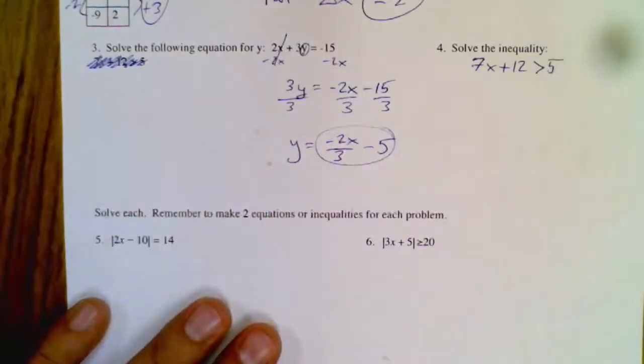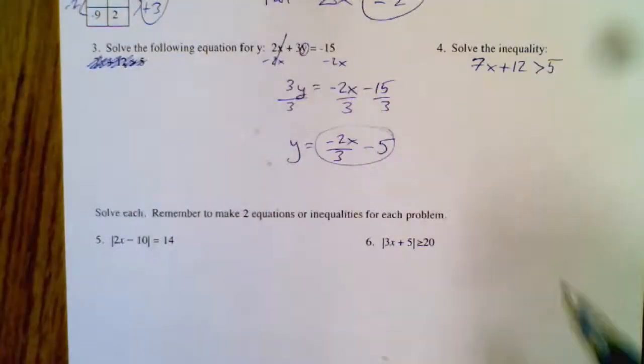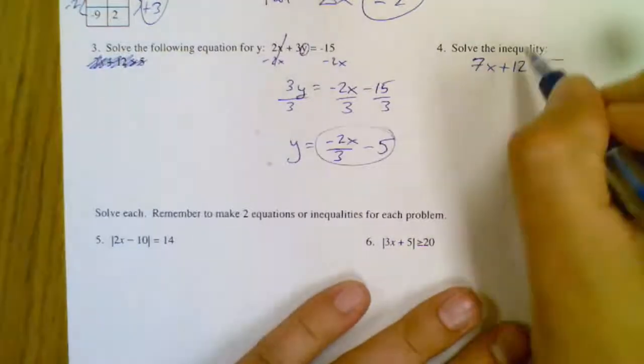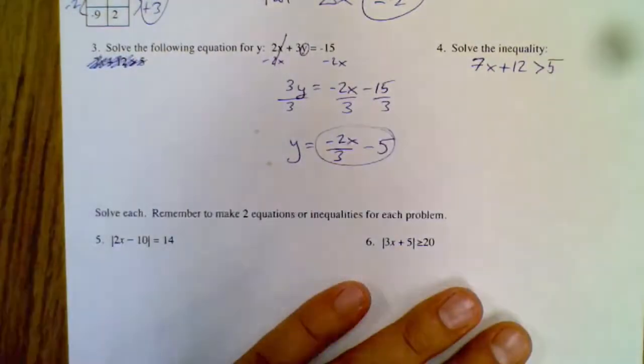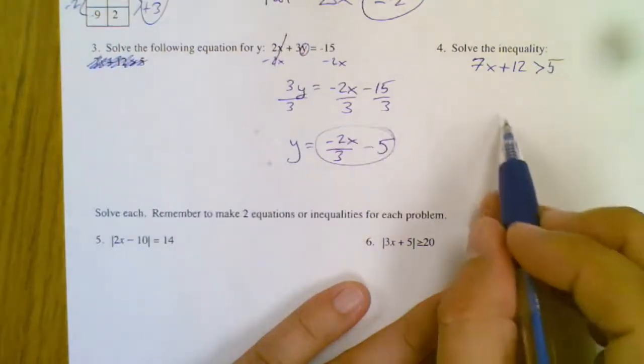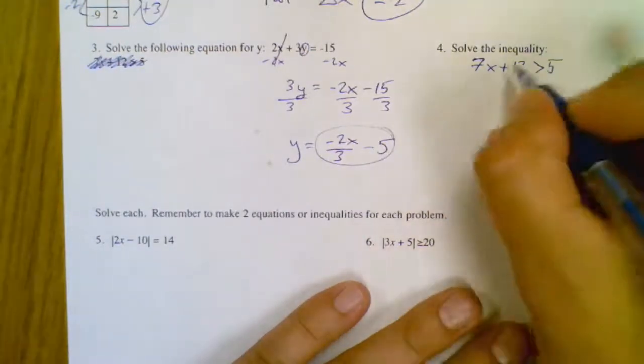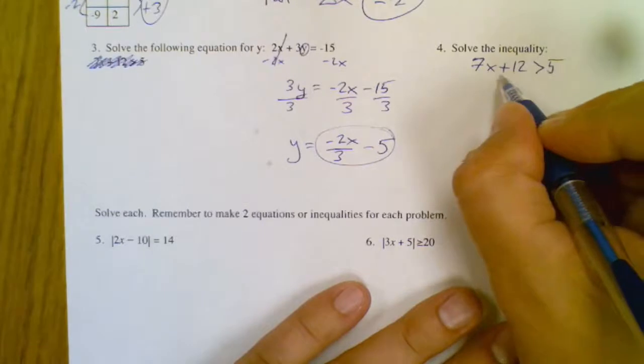Okay, so now on to this one, solve an inequality. Now an inequality works just like an equal sign, remember, unless you multiply or divide by a negative. So I treat this one just like 7x plus 12 equals 5.